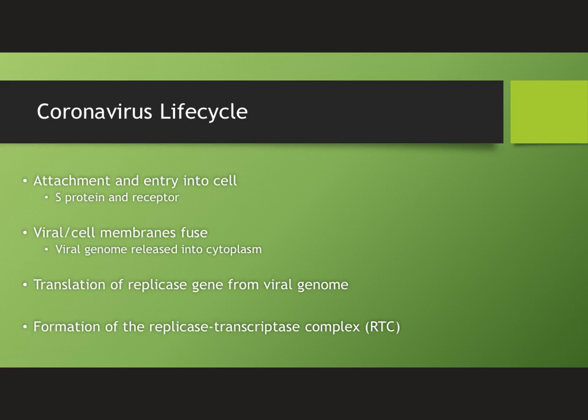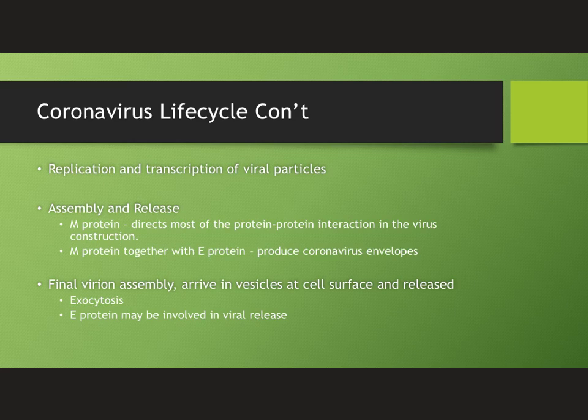The RTC is responsible for RNA replication and transcription. After replication and transcription of the viral particles occurs, assembly and release can follow. The M protein is responsible for directing most of the protein-protein interactions in virus construction. It has been suggested that the M protein, together with the E protein, are responsible for producing the coronavirus envelopes. Once the virions have finished assembly, they are transported to the cell surface in vesicles and released by exocytosis. It has also been suggested that the E protein is involved not only in viral assembly but also in viral release.